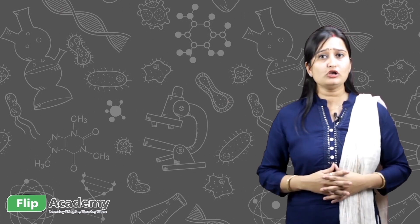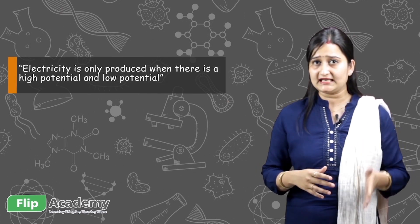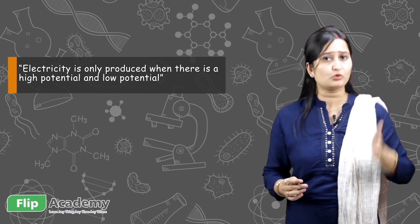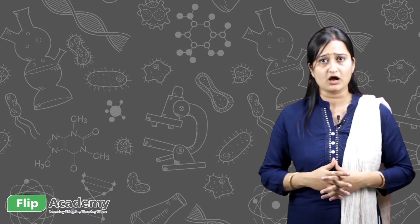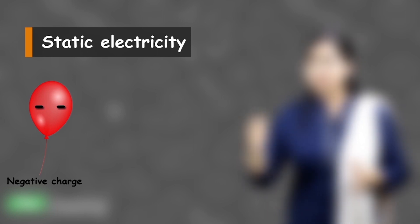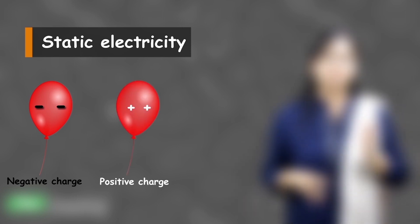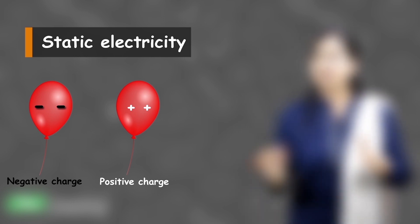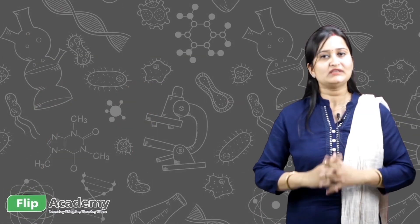Electricity is only produced when there is a high potential and a low potential. High potential and low potential are created between positive and negative charges. In the case of static electricity, one body becomes negatively charged and the other becomes positively charged. So there occurs a potential difference, and due to this potential difference, some amount of mild electricity flows — which we experience as an electric shock, and which we call static electricity.